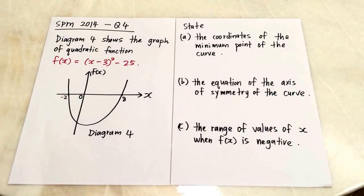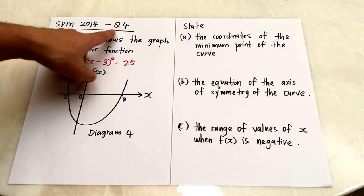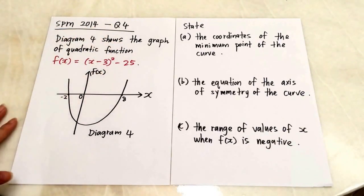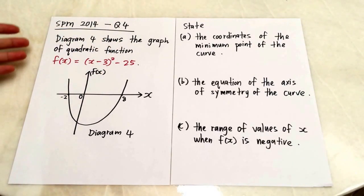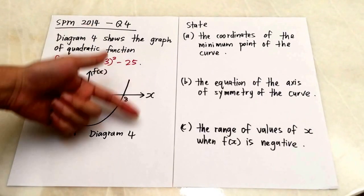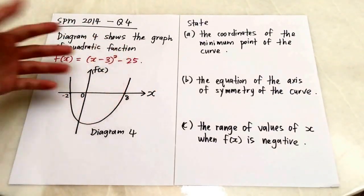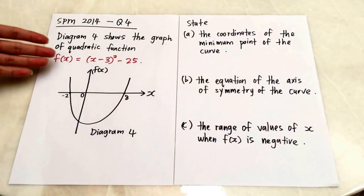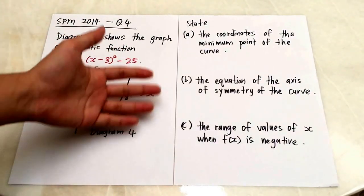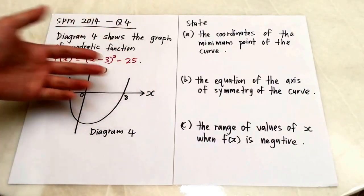This is MF Paper 1, SPM 2014, question number 4. In this question, diagram 4 shows the graph of the quadratic function, and you have an equation.